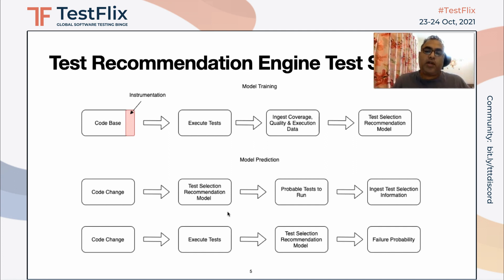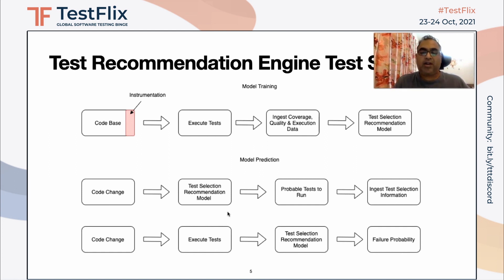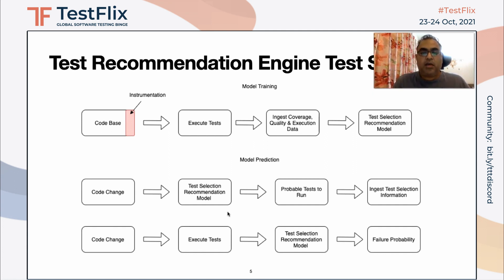Once you create this model, you can start predicting against any code change in your database. When a code change happens, you take the meta information, run it through the test selection recommendation model, and it will tell you which tests you need to run. You then ingest that test selection information to retrain the model and make it more accurate. We have seen that accuracy above 95% is good, which gives you a likelihood that close to 100% accurate results will come over time.